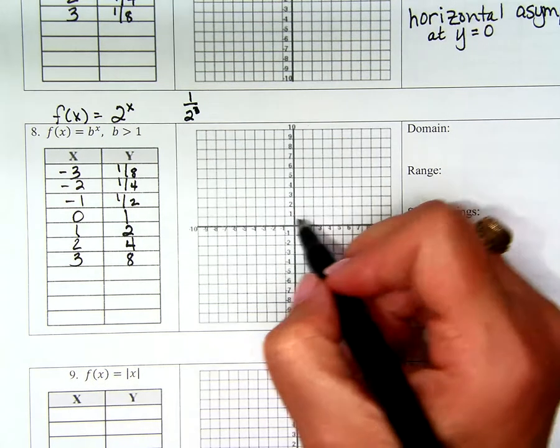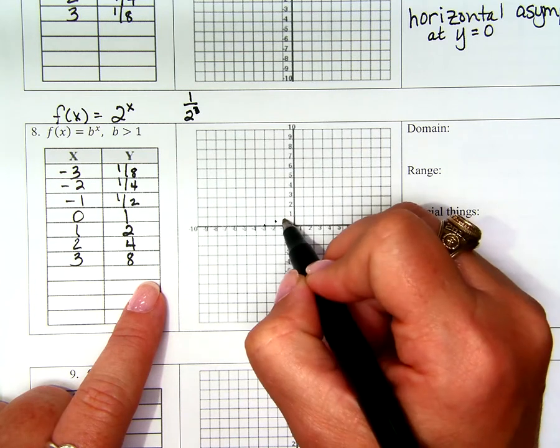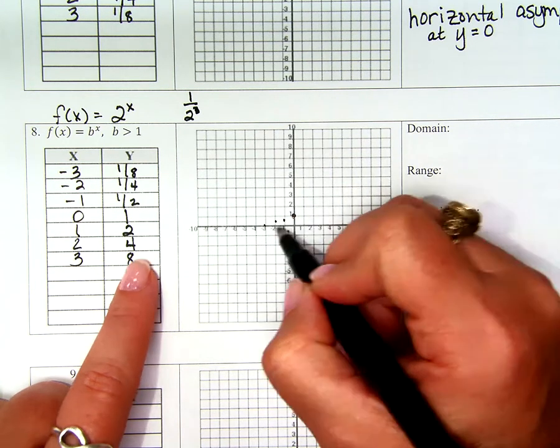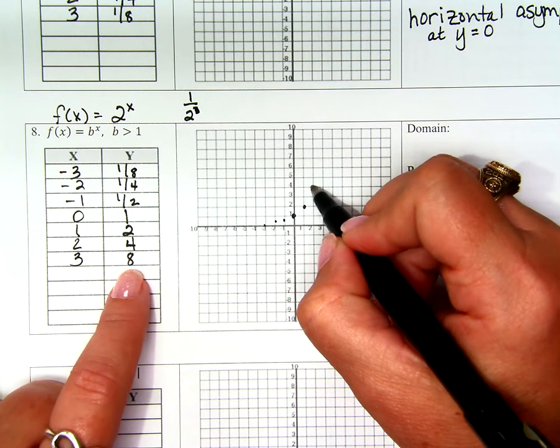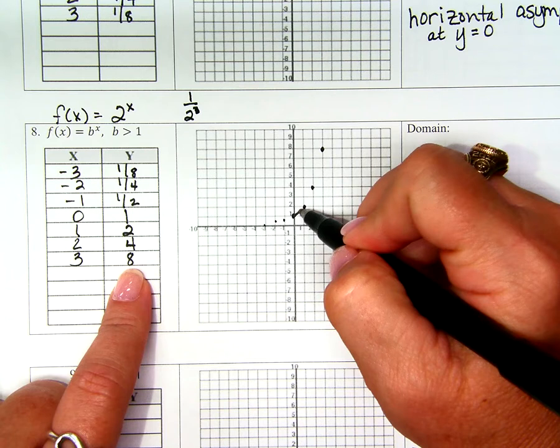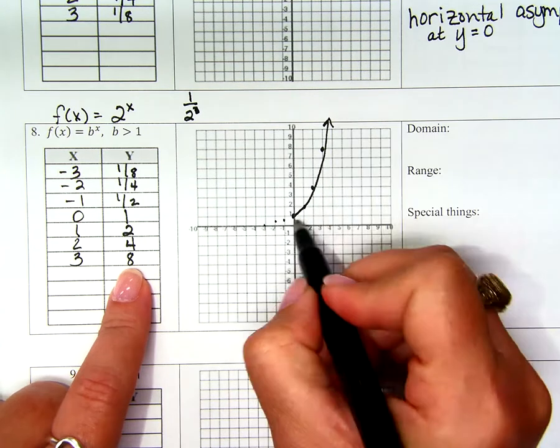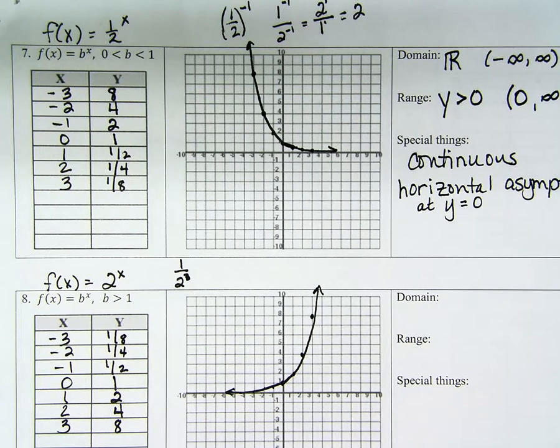Let me graph those for you real quick. That was a little too high, sorry about that. 1 is 2, 2 is 4, 3 is 8. Are these two similar looking? Do they look similar? Yeah?